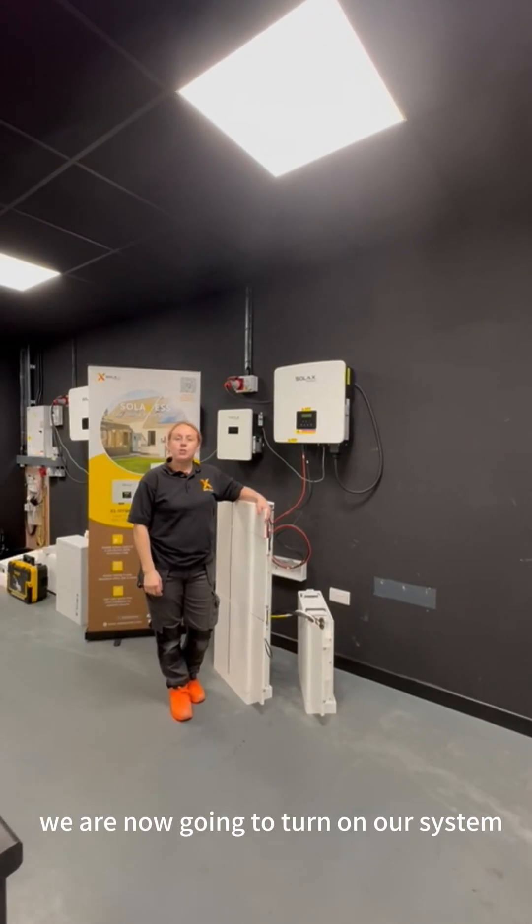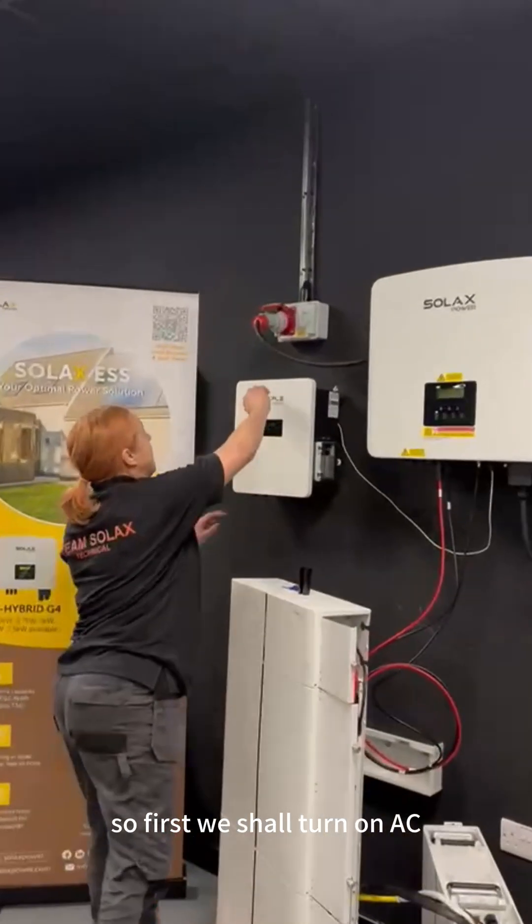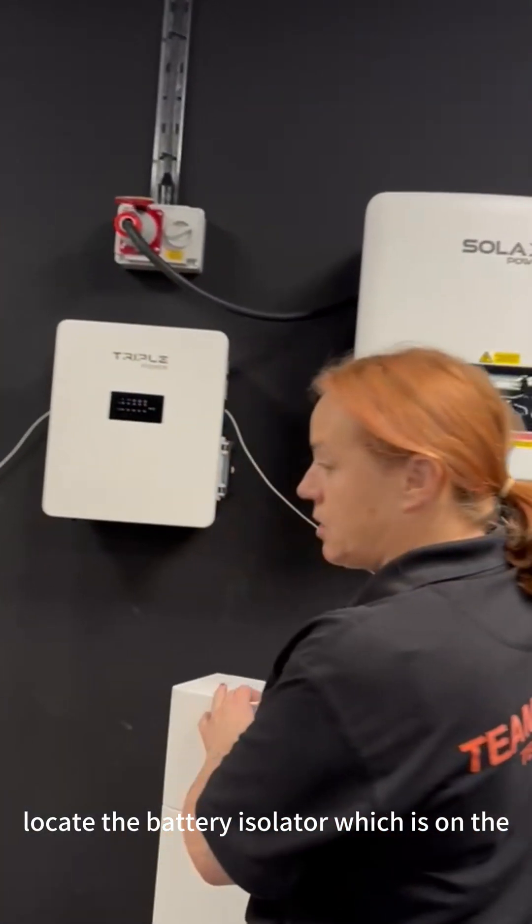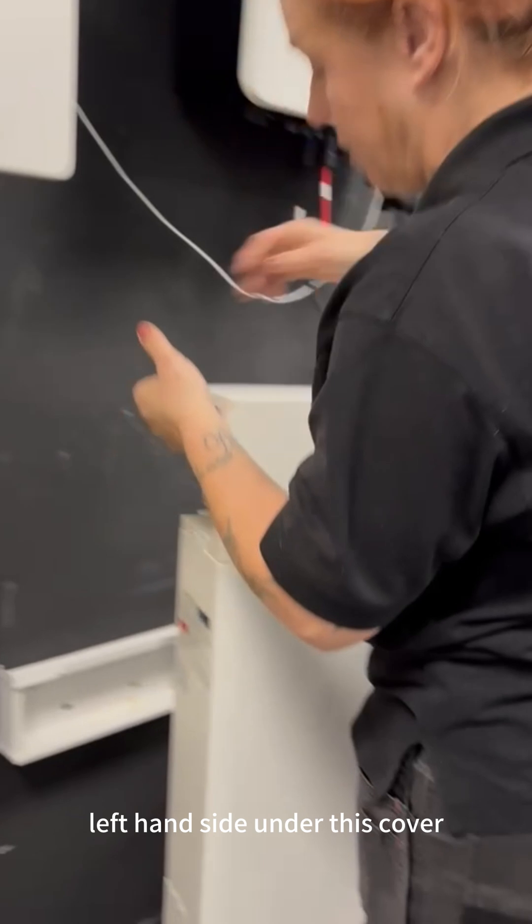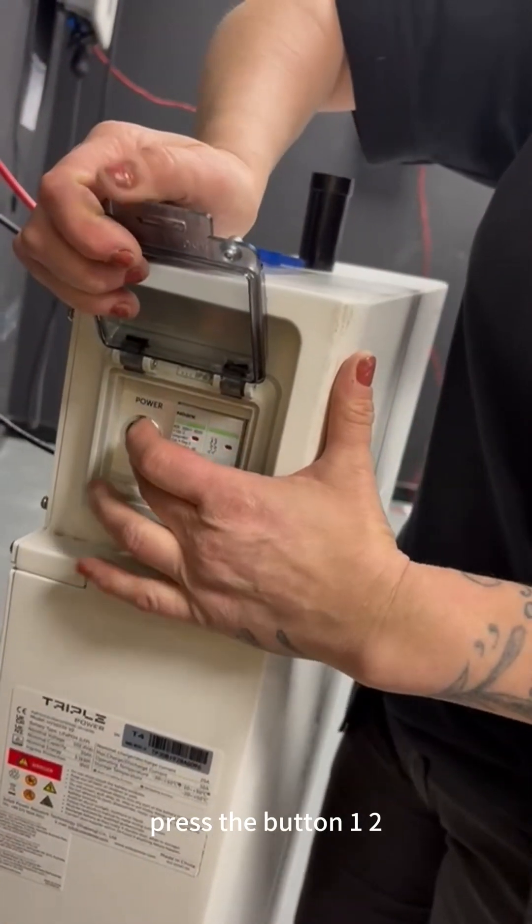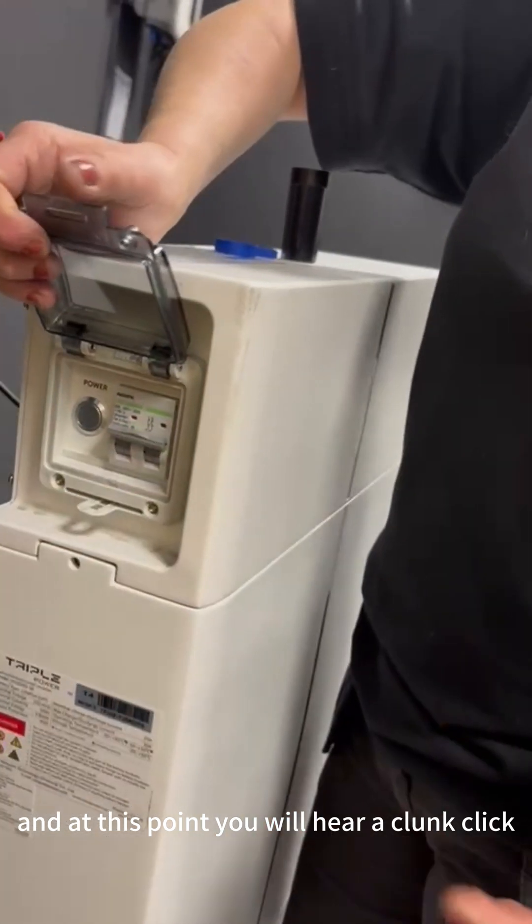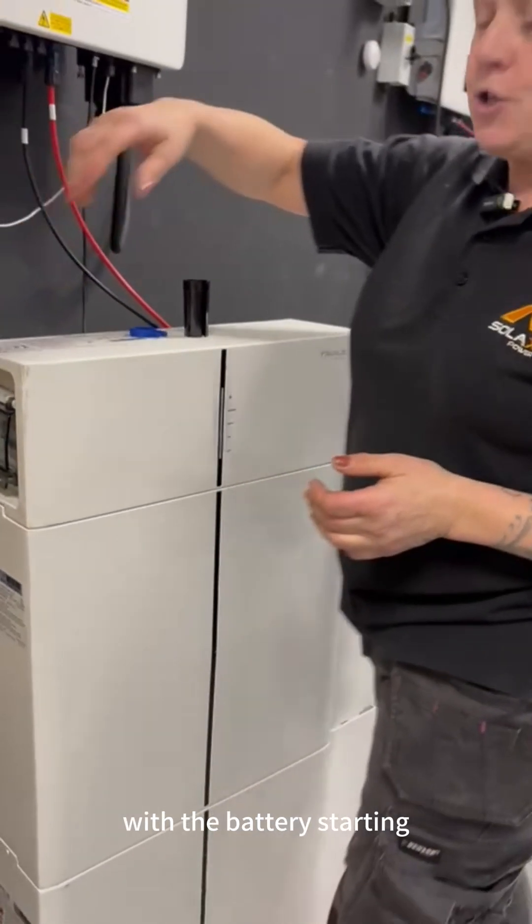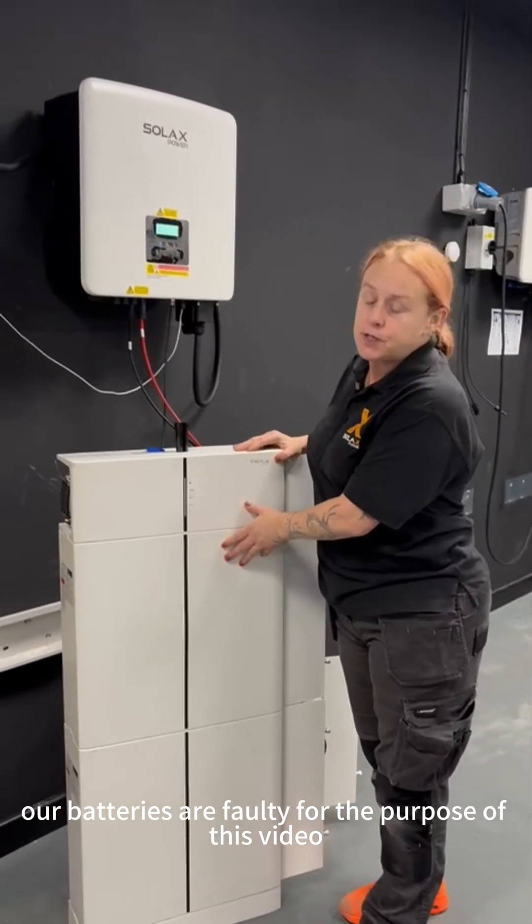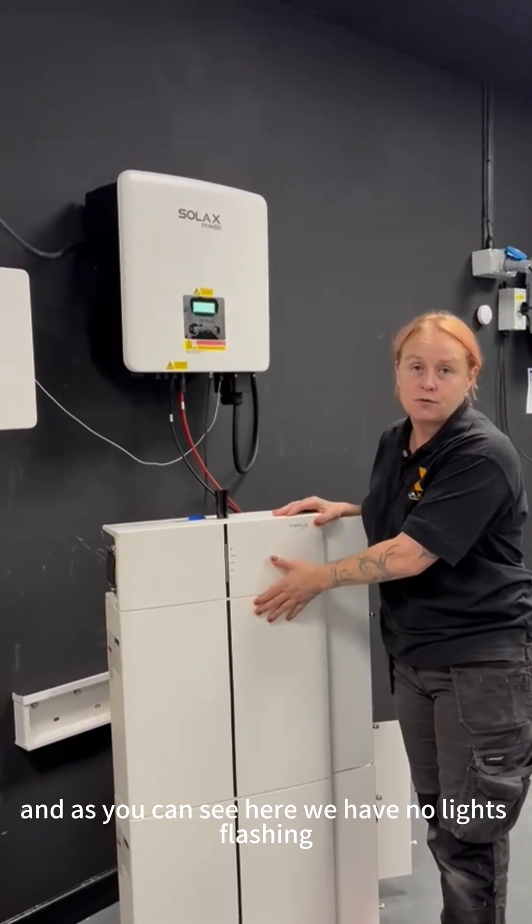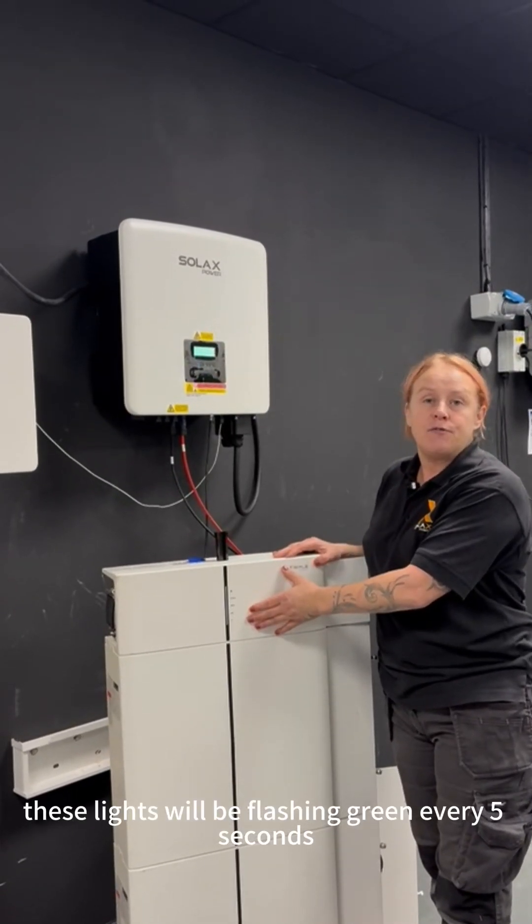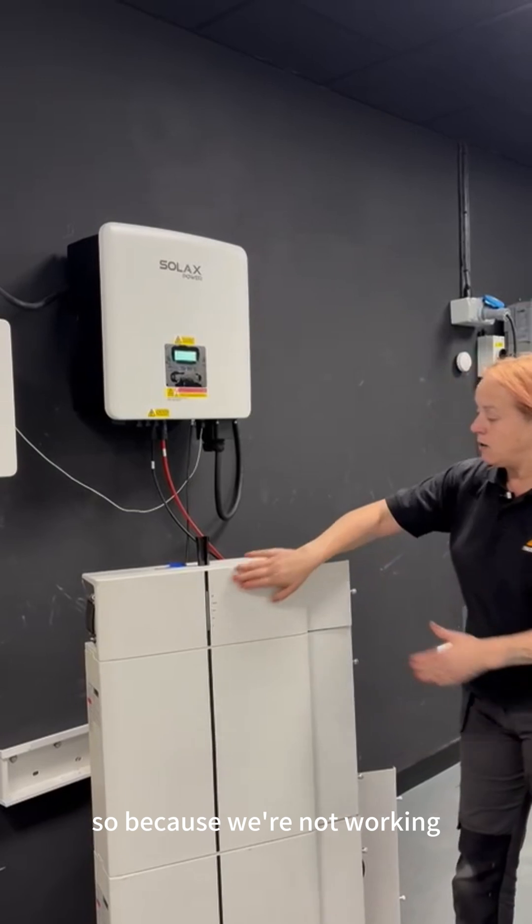We are now going to turn on our system. So first we shall turn on AC. We shall then locate the battery isolator, which is on the left hand side under this cover. We'll turn on the isolator, press the button, one, two, and at this point you will hear a click with the battery starting. However, our batteries are faulty for the purpose of this video and as you can see here we have no lights flashing.